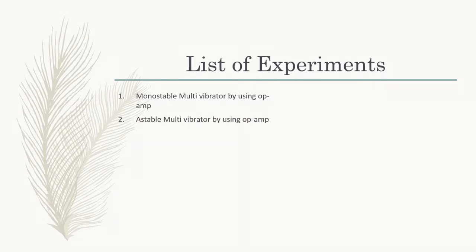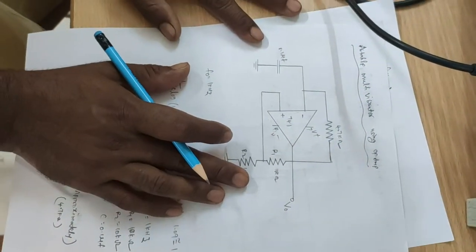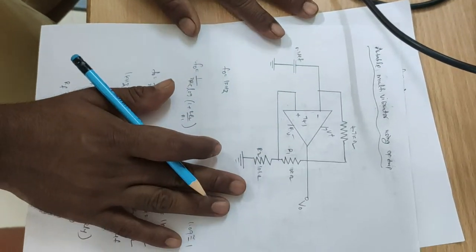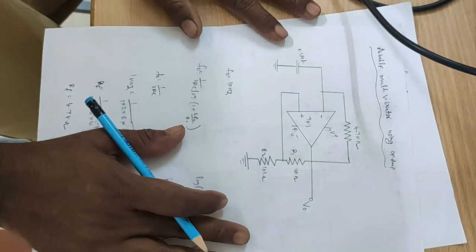Following are the list of experiments. Second experiment is design and verification of an astable multivibrator by using op-amp. And this is the circuit diagram for an astable multivibrator to generate the square waveform.